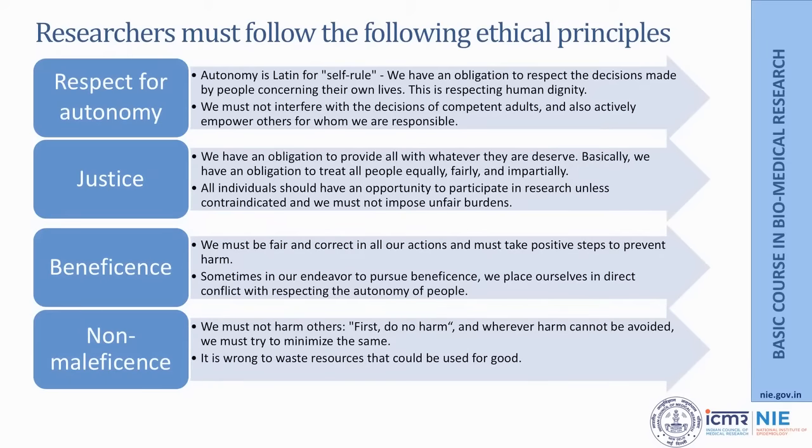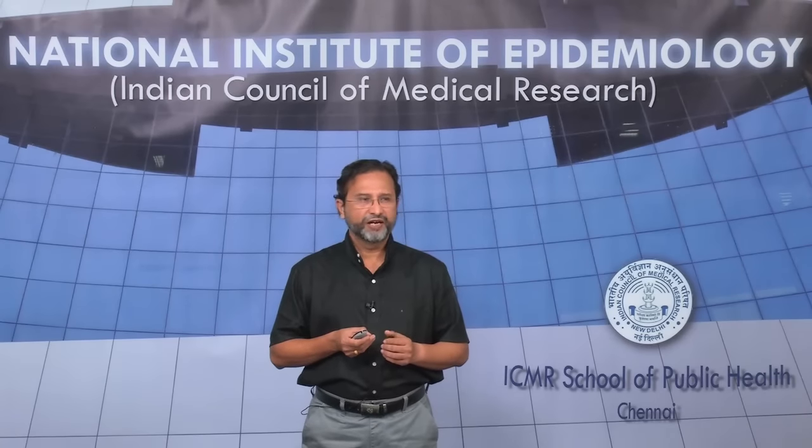Autonomy means people should be clearly informed that they have a right to decide whether to participate in research or not. The next principle, justice, emphasizes that we have an obligation to treat all people equally, fairly, and impartially. The benefits of research should be extended to everybody — except in certain situations like pregnancy where women cannot participate — and unless contraindicated, all groups should have an opportunity to participate, but this should never be imposed.